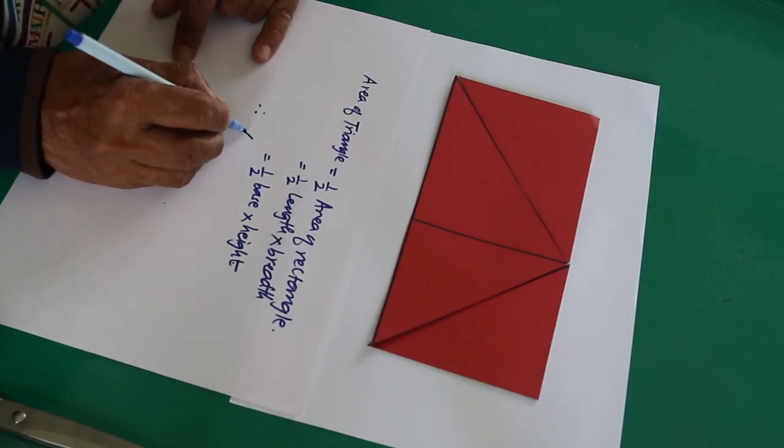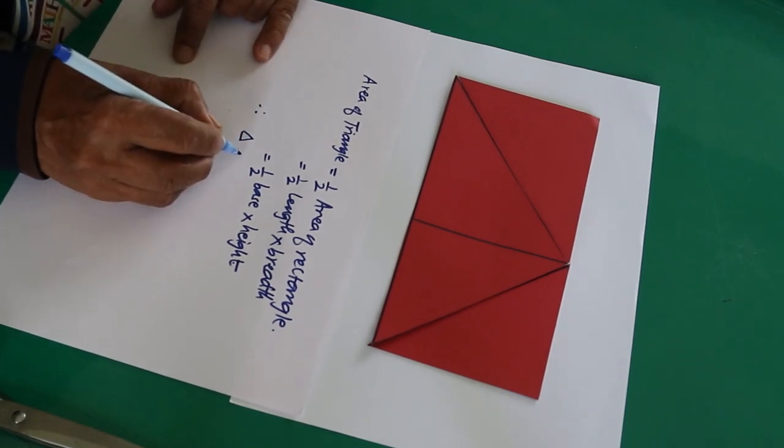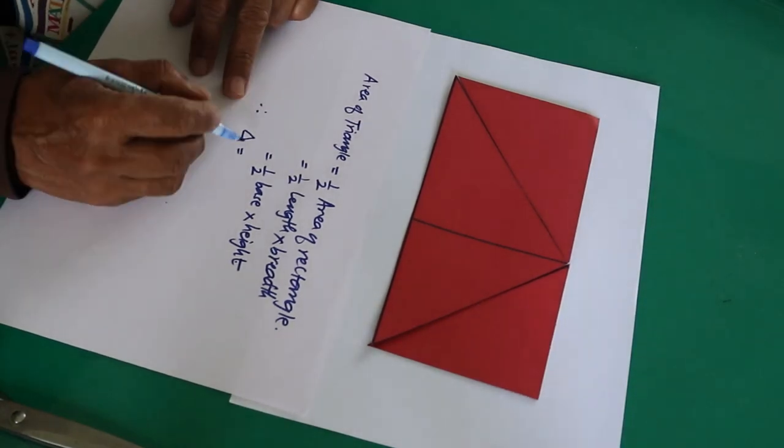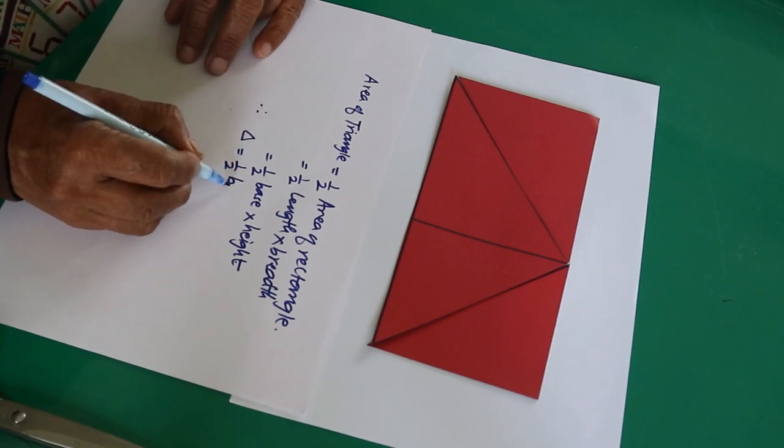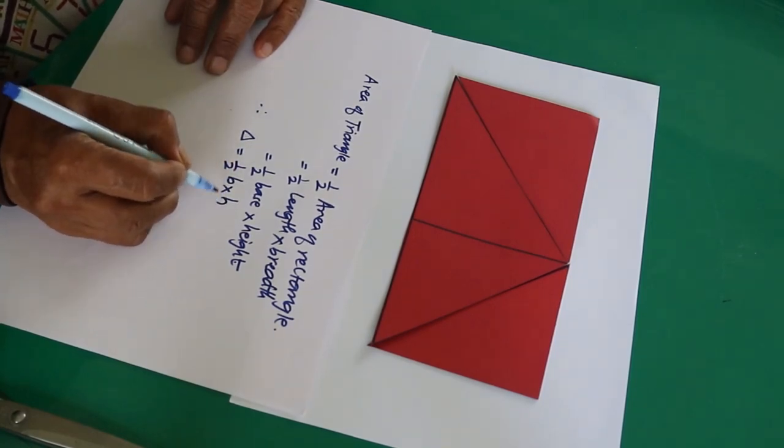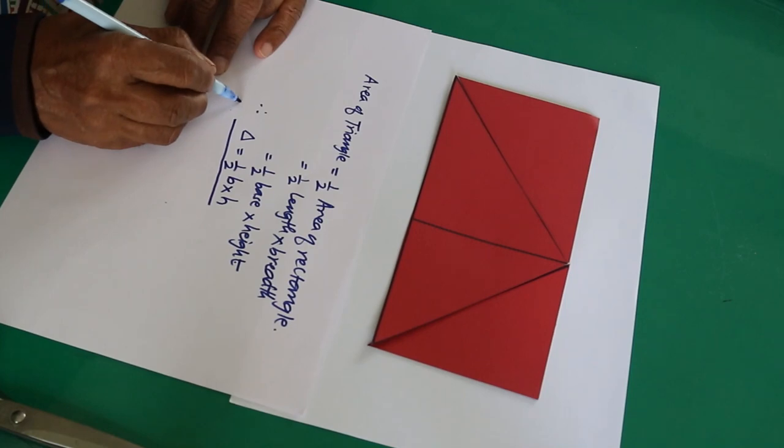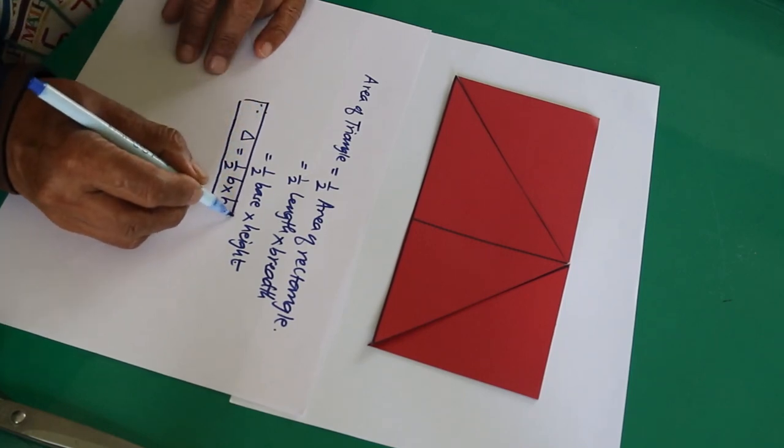Therefore, let's denote area by delta, the symbol to represent the area of the triangle. And half, base is denoted by b, and height is denoted by h. It is the generalization. Very simple one.